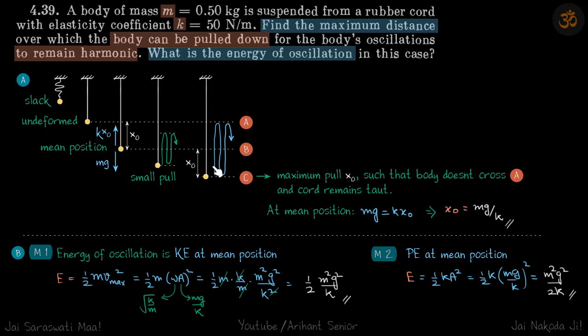Our answer for how much maximum distance can be pulled is simply x naught. What is x naught? It can be found by balancing these forces so mg is equal to kx naught, so x naught is mg by k. Maximum pull x naught at this position is where you can maximum pull such that body does not cross and chord remains taut. To find the value of x naught, at mean position mg equals kx naught, so x naught equals mg by k.